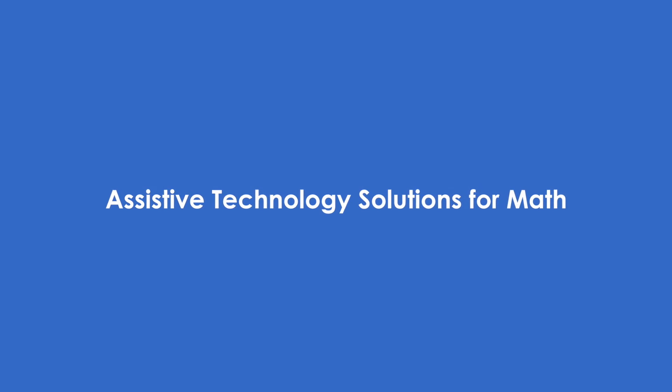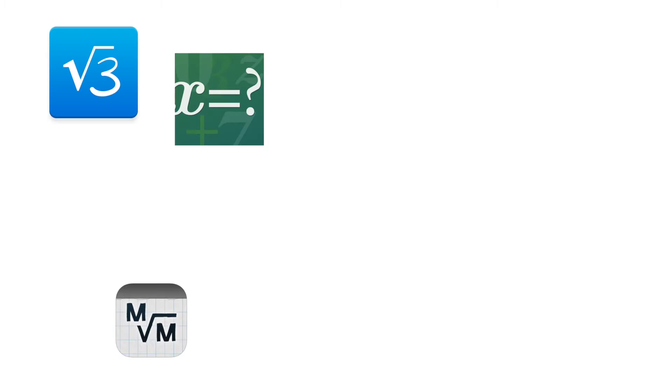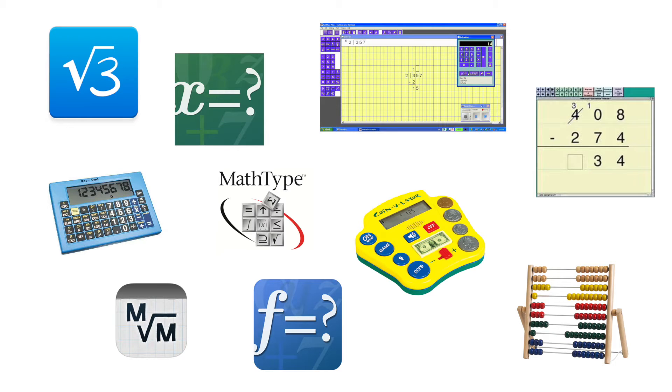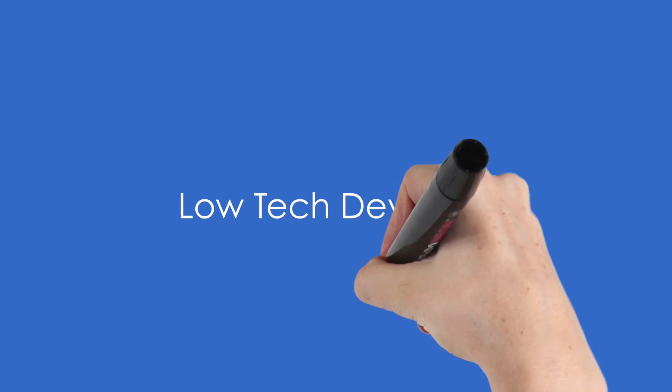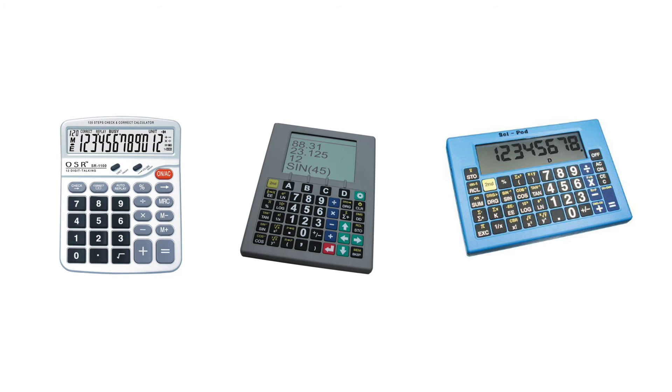Today we're going to look at some assistive technology solutions for math. When it comes to assistive technology solutions for math, there are many low-tech devices available. This includes talking calculators and talking scientific calculators. These can be very helpful for individuals who may have vision loss or a learning disability.